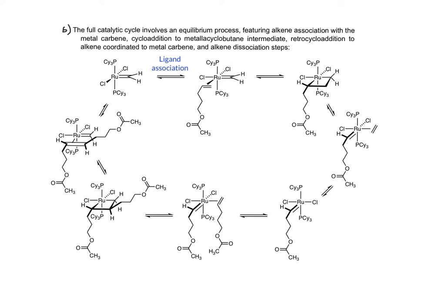Chauvin's mechanism introduced a new organometallic mechanism of cycloaddition of the two carbons of the alkene with the carbon and ruthenium of the carbene to give a metallocyclobutane intermediate.